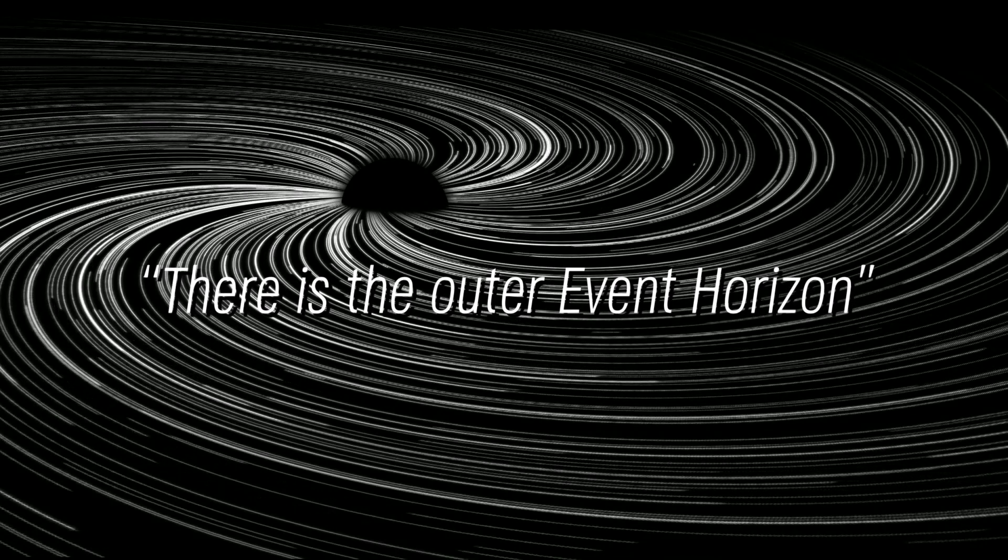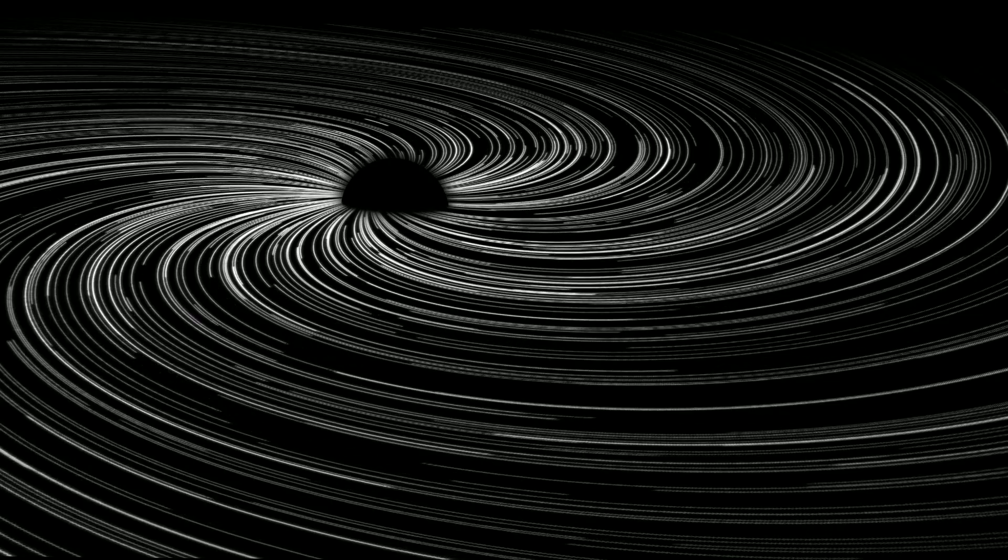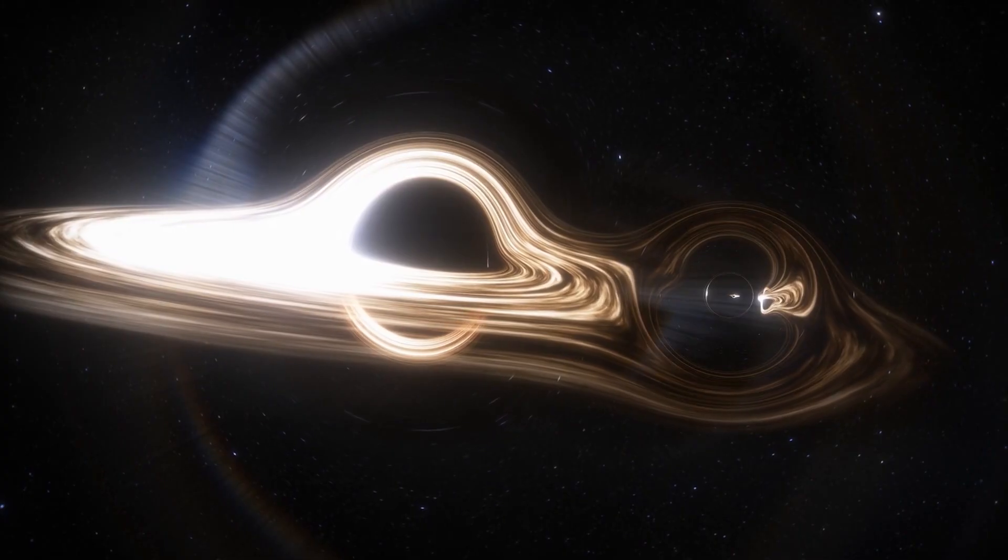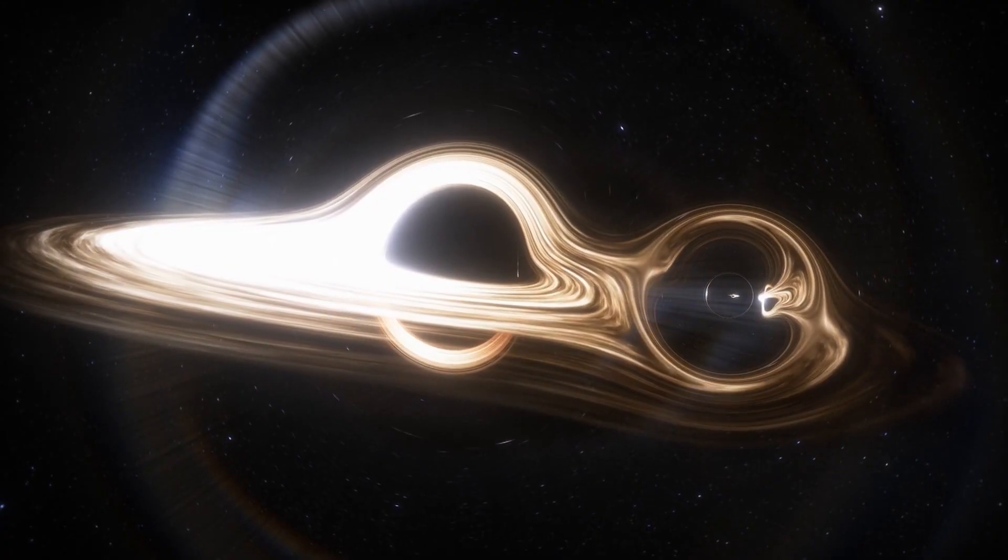First, there is the outer event horizon, a boundary that surrounds the mouth of every black hole. Once something reaches this point of the black hole, it cannot escape and is either trapped there or is pulled deeper on its journey to the singularity.